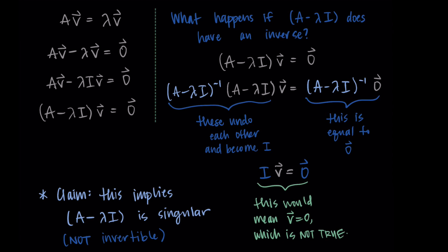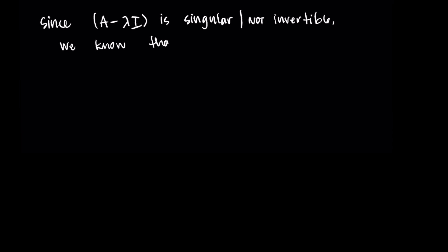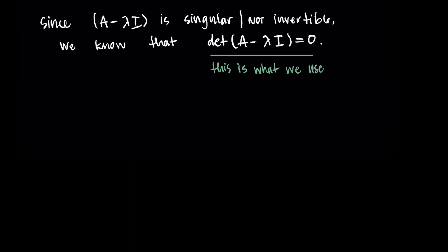So we have a contradiction. If A minus lambda I has an inverse, that forces V to be zero, but we already said that isn't true. So it must be the case that A minus lambda I does not have an inverse. The key takeaway is that A minus lambda I is singular, and this is important because it relates back to the determinant. Since A minus lambda I is singular — not invertible — we know that the determinant of this matrix must equal zero. So the determinant of A minus lambda I equals zero, and this is what we use to solve for lambda, our eigenvalues.